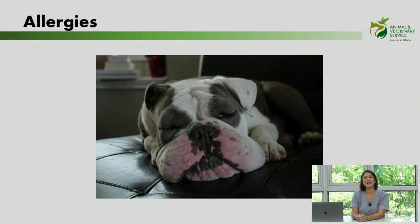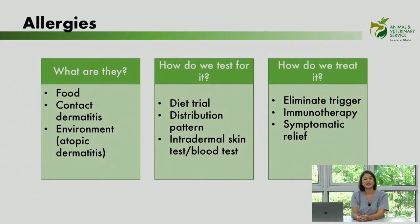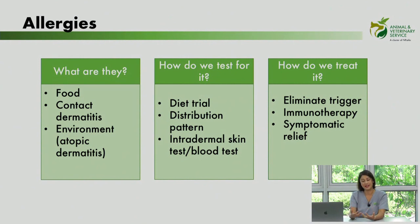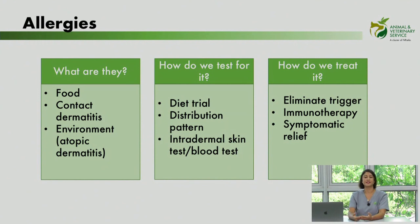Finally, we move to the more complicated end of the itchy dog issue: allergies. There are three main classifications. First, food allergies — where ingesting something causes the itchy skin condition. Second, contact dermatitis — where your dog is allergic to something in its physical environment, such as grass or a leash. And third, environmental allergies, often classified as atopic dermatitis, caused by things like dust, dander, and different types of pollen. Environmental allergies tend to be more difficult to treat and diagnose, requiring several visits to your veterinarian.